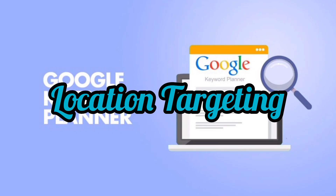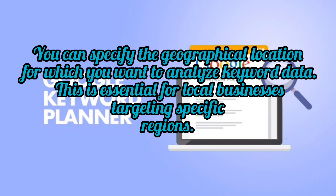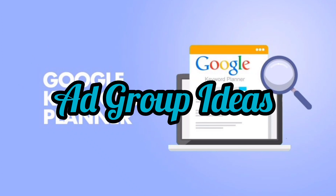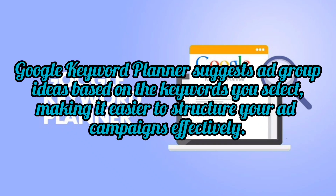Location Targeting: you can specify the geographical location for which you want to analyze keyword data. This is essential for local businesses targeting specific regions. Ad Group Ideas: Google Keyword Planner suggests ad group ideas based on the keywords you select, making it easier to structure your ad campaigns effectively.